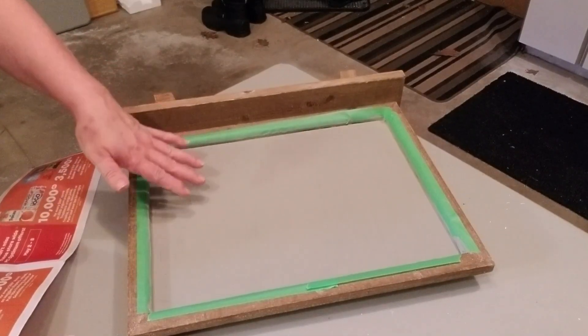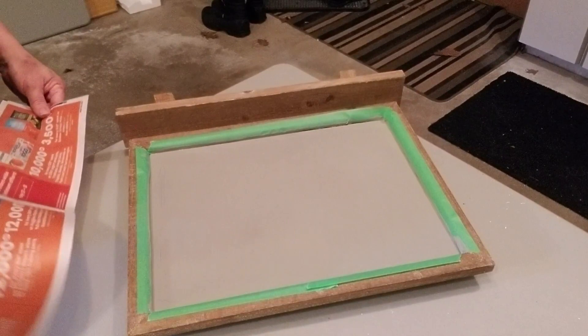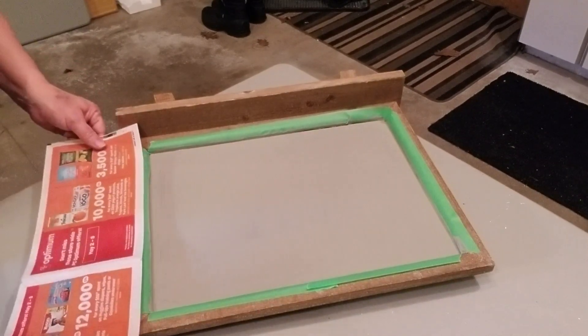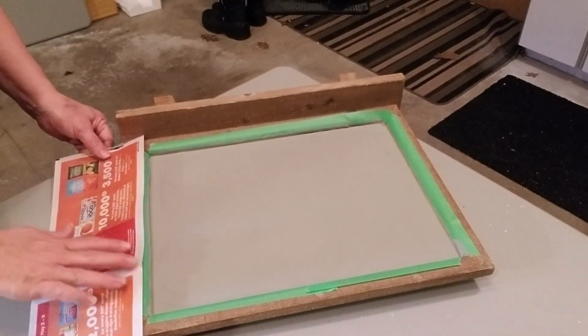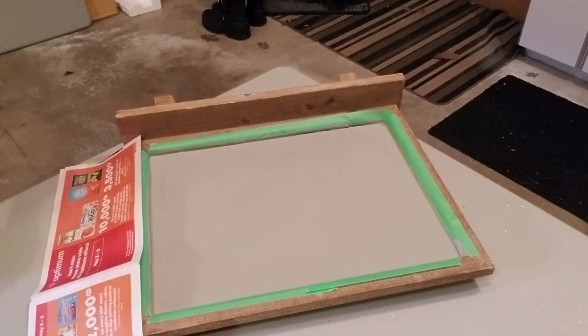So while I'm waiting for the chalk paint to dry, I'm just going to take some more painter's tape and just use some newspaper and cover up the wood frame so I don't get any extra splatter on it from the spray paint.